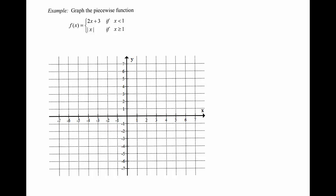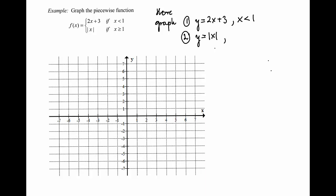To graph a piecewise function, we need to graph each component function and take the part of that component that corresponds to the given values of X. In this particular case, we need to graph two equations: y equals 2x plus 3, taking the part where x is less than 1, and y equals absolute value of X, taking the part where X is greater or equal to 1.